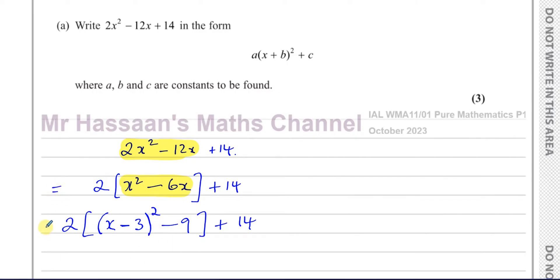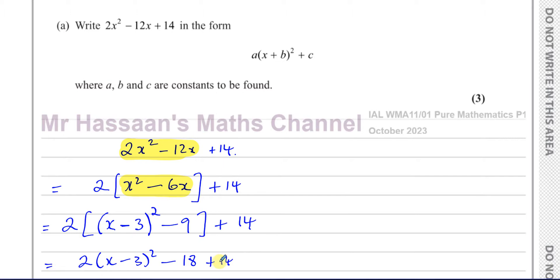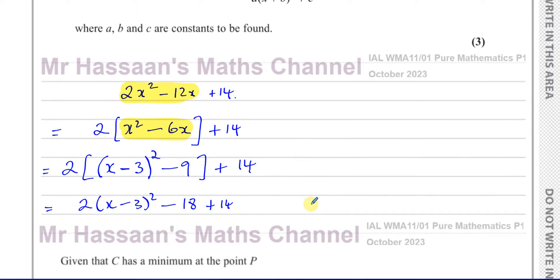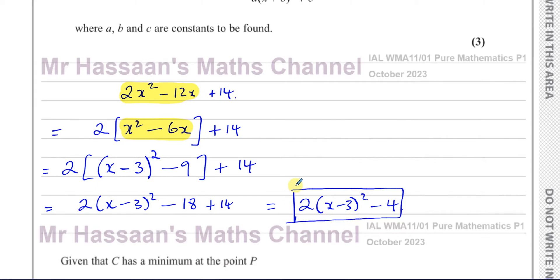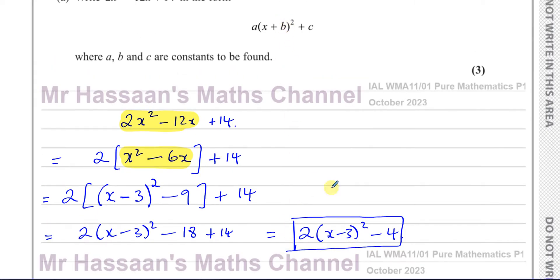I take the 2 and multiply it with the two terms inside the bracket: 2 times (x minus 3)² and 2 times minus 9, which is minus 18. Then we have plus 14 at the end — I don't multiply that by 2 because I closed the bracket before it. So finally we get 2(x minus 3)² minus 18 plus 14, which gives minus 4.